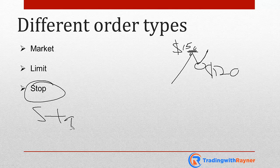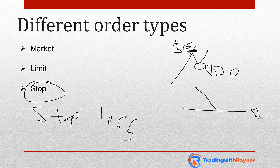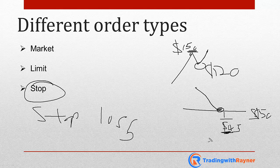A sell stop order is just the opposite. Another variation of the stop order is the stop loss order. For example, say you went long when price was at $50, and you believe that $50 level should hold. But if price trades lower to about $45, you want to exit the trade. So you place a stop loss order at $45, meaning you will be taken out of the trade if price reaches $45.